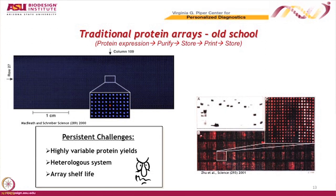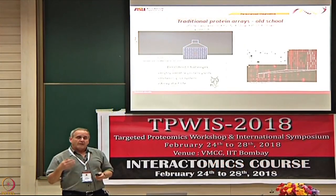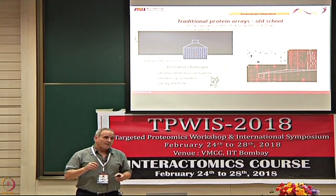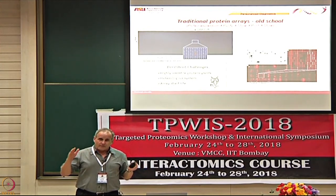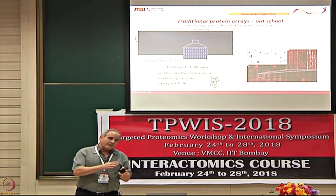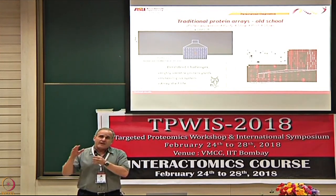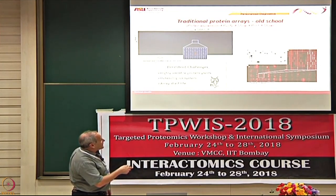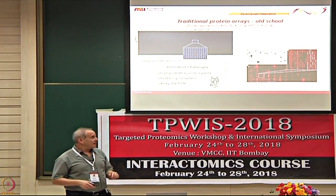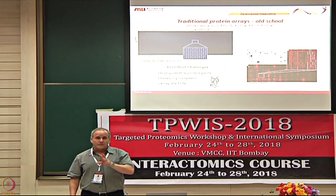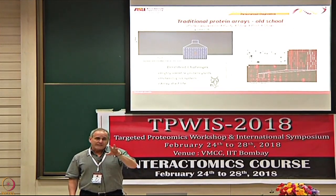The classic way of making arrays is to purify proteins and spot them on the surface. This method definitely works and people have done it for many years, but it has limitations. The amount of protein printed varies over several orders of magnitude — much of the protein tends to be at the lower end of that spectrum, and a few proteins may be ten thousand times more abundant. You end up with an array with some areas of strong signal but many areas that are relatively dark because there's almost no protein there.